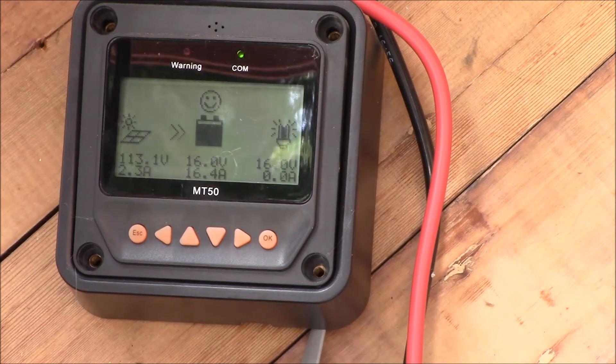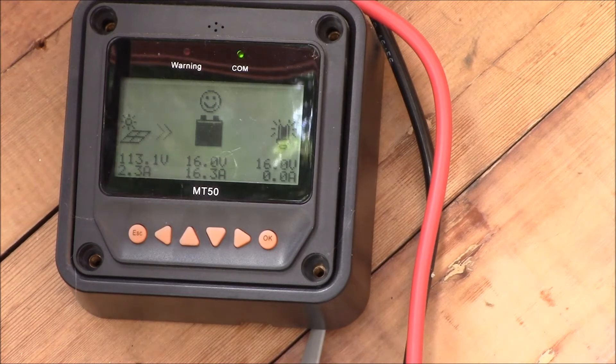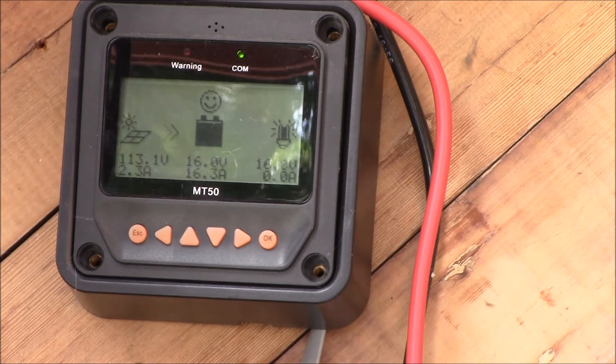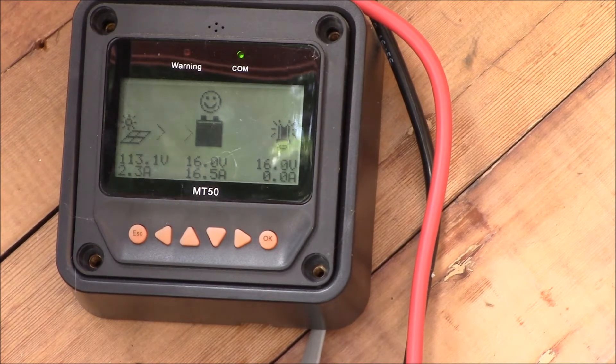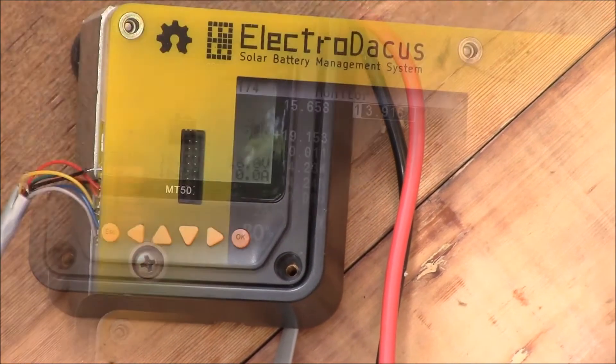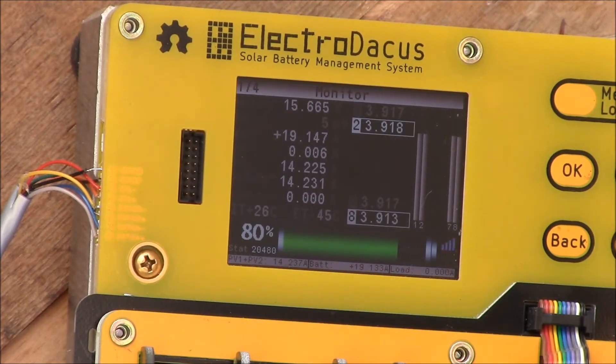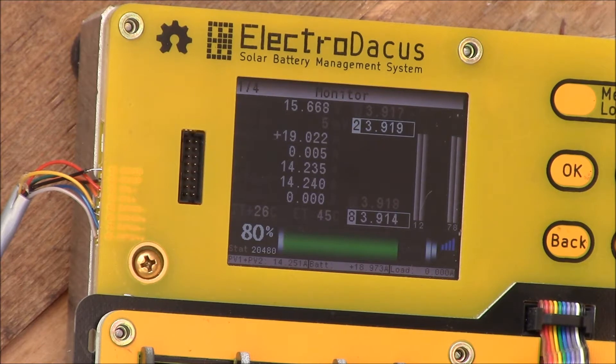I think it was up in the 500 to 600 watt range earlier this morning. It's right around noon now so we're backing off on the charging. The SBMS 120 is still putting out full power. Not sure if the screen shows up but we're bringing in 14 amps from two parallel panels, those are 270 watt panels into the SBMS 120.